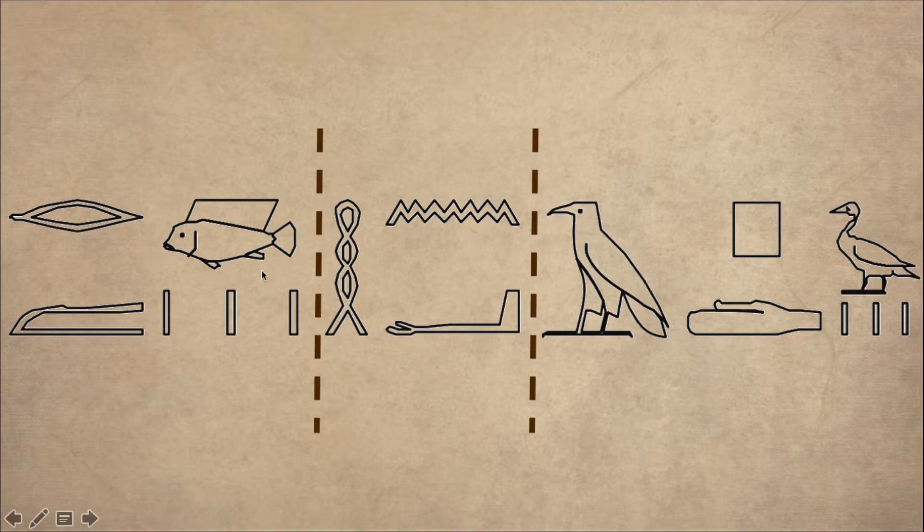Basically, you have the determinative that suggests that we're talking about a fish. Second word is Ha-En-A, hanh. Hanh is the equivalent of and in English.